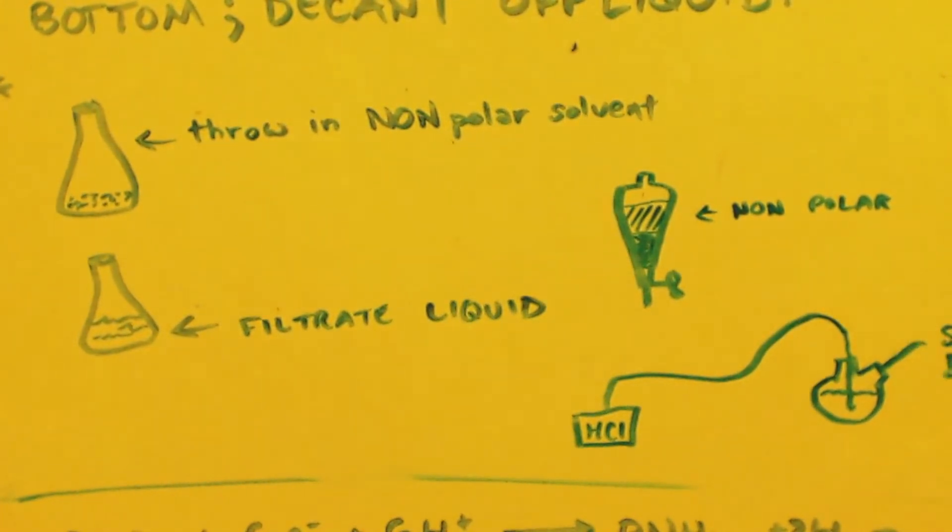Now the water, put back into the sep funnel and add five milliliters of your non-polar solvent you chose. Shake it up, vent, shake it up, vent, shake it up, vent, let it sit for 15-20 minutes. Then drain out the water and save it. Drain out the five milliliters of your non-polar solvent and put it with your mother liquor. And throw the water back in there. Repeat that process like five times. Get all the methylamine out.